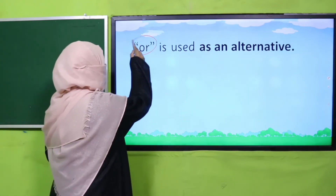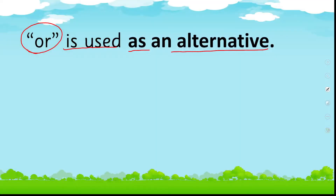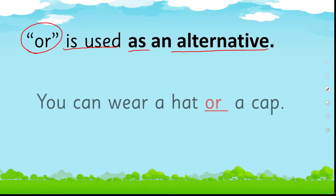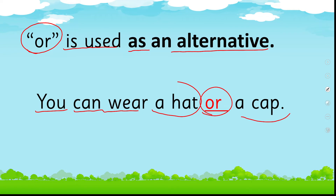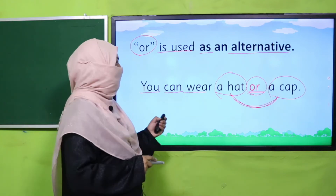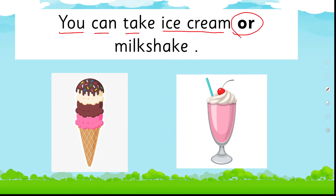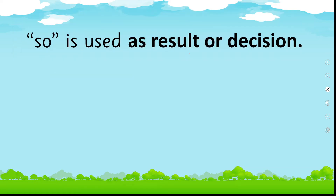The next joining word is 'or.' Or is used as an alternative — there are two things and you can use either one. For example: 'You can wear a hat or a cap.' Hat or cap are alternatives; you have two options and you can choose one. Another example: 'You can take ice cream or milkshake' — you have both options, so choose one. That's how we use 'or.'